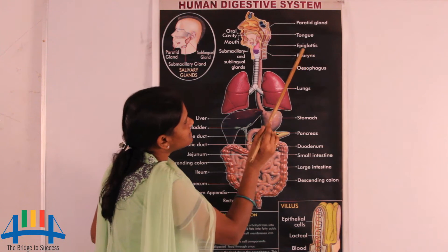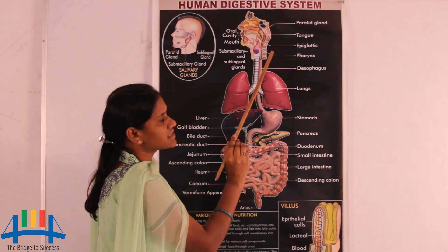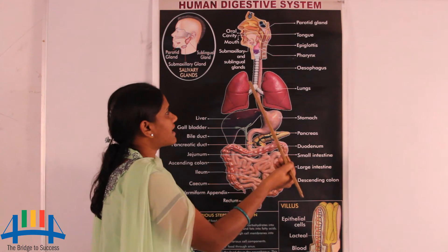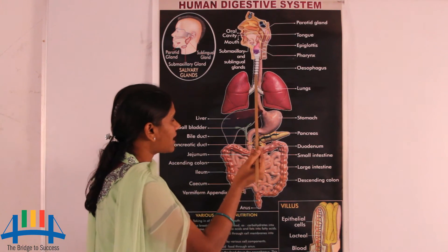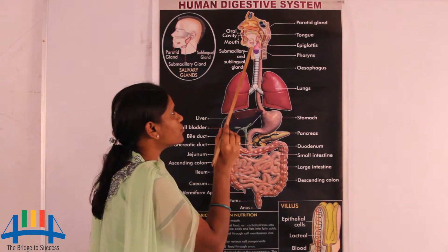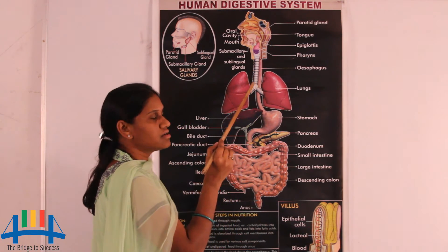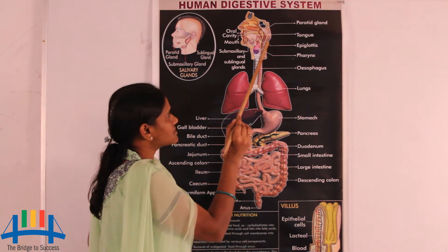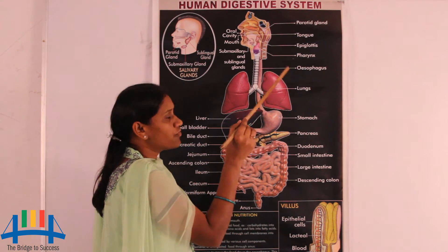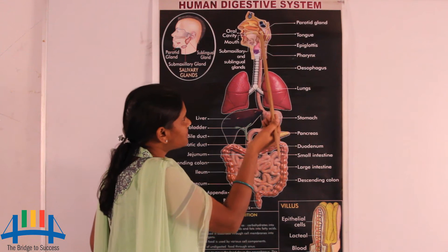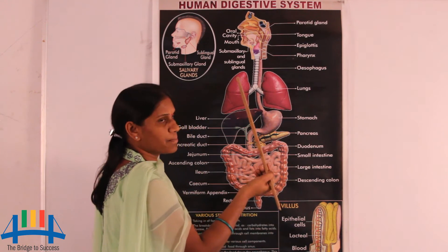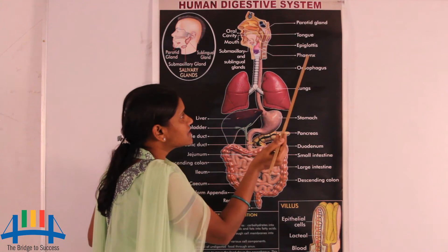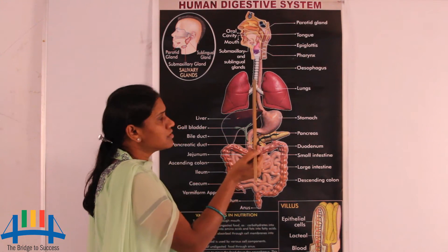A special part called the pharynx acts as a junction between two tracts — the digestive tract and the respiratory tract. Both systems are connected by the pharynx. When we take food, the pharynx sends it into the food pipe. When we take air through the nose and nostril cavities, the pharynx allows it into the respiratory tract.